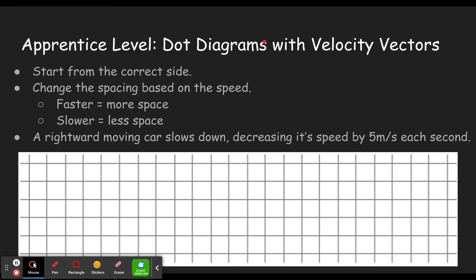Here's a sample problem: a rightward moving car slows down, decreasing its speed by five meters per second each second. So if it's a rightward moving car that's moving towards the right, that means we're going to have to start on the left. If it's slowing down, that means it's starting out going fast, so we want our dots to be far apart at the beginning because in one second it gets all the way from here over to here. Then they're going to start getting closer together because it's slowing down.